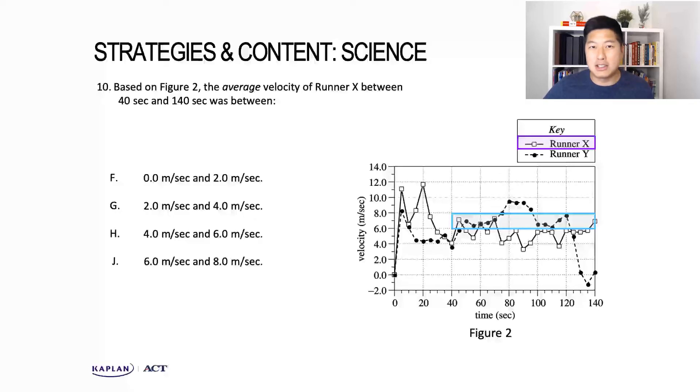So if we go back to answer choice H, between four meters per second and six meters per second, because this is where all the data points lie, we can confidently choose this as our answer for the average velocity of runner X.